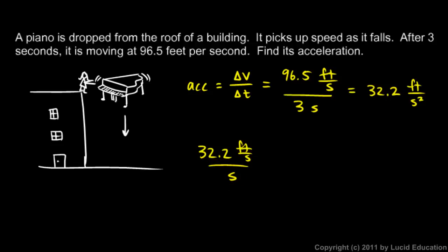And that number is actually a pretty significant number. That's a known number. 32 feet per second squared, or 32 feet per second per second, is commonly known as the acceleration due to gravity, and it's sometimes referred to as 1g.